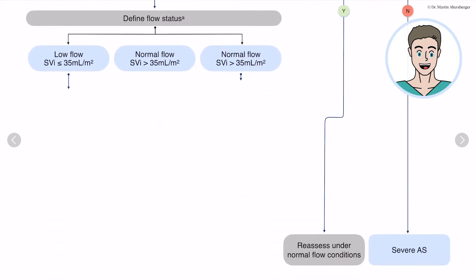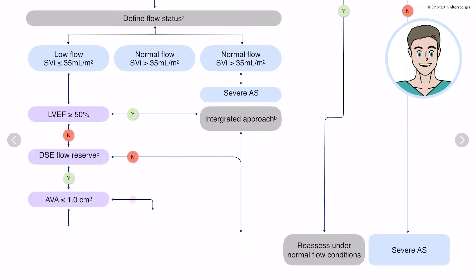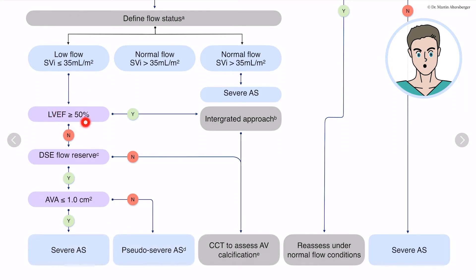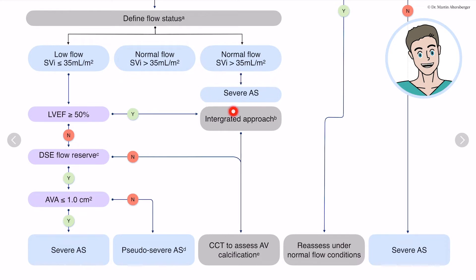Sticking to the left side initially: if we have a low flow below 35 mL/m² but a normal ejection fraction of 50% or above, we should go the integrated approach where we need calcium scoring and a CT scan. If we have a normal flow above 35 mL/m², we can also say this is a truly severe aortic stenosis and we do not need further workup.